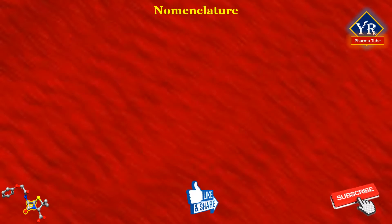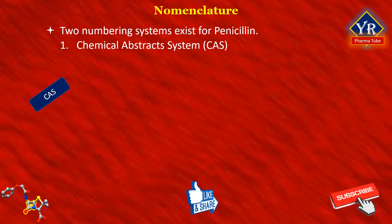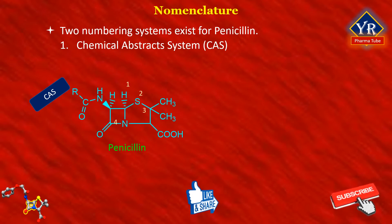Nomenclature of Penicillin. The nomenclature of penicillin is somewhat complex and very cumbersome. Two numbering systems exist for penicillin. The first one is the Chemical Abstracts System, abbreviated CAS and pronounced CAS. This CAS system initiates the numbering with the sulfur atom and assigns the ring nitrogen the fourth position. Thus, according to this system, penicillins are named as 6-acylamino-2,2-dimethyl-3-carboxylic acid.